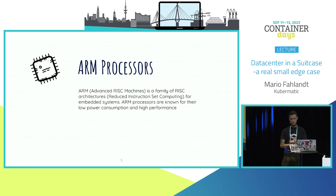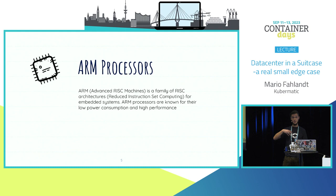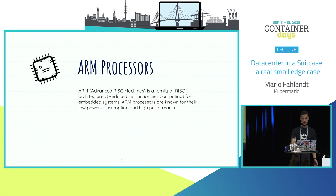We have ARM processors for IoT and different environments, with a variety of cores available: Cortex cores for high-performance applications and Cortex-R cores for real-time systems. Also, moving to 64-bit technology instead of 32-bit allows us to add more memory to those processors, which makes ARM more feasible and approachable in the cloud-native world.